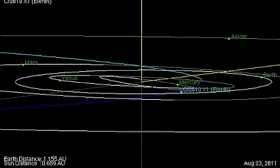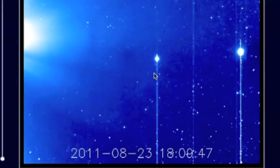Everything is pretty much in line with Stereo B as it should be. So we know that that is Jupiter, Mercury, and Elenin.